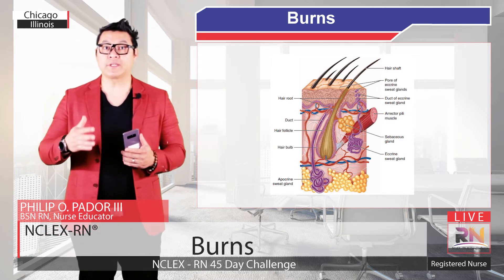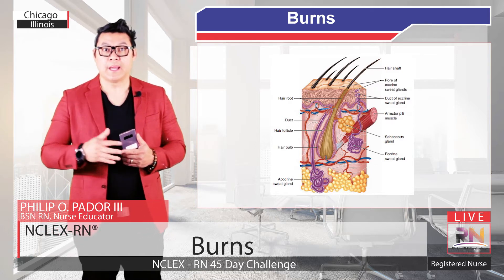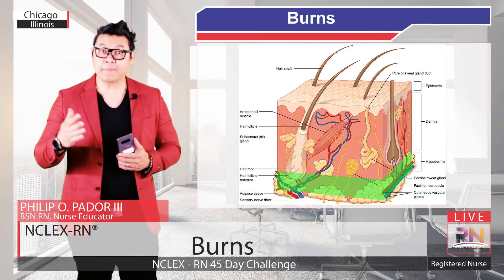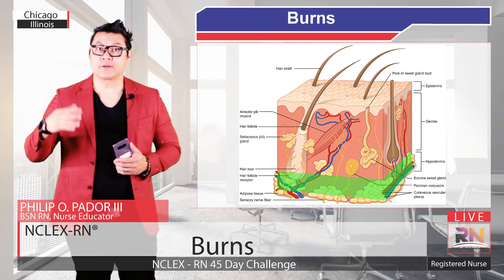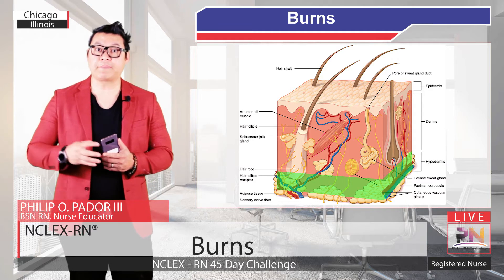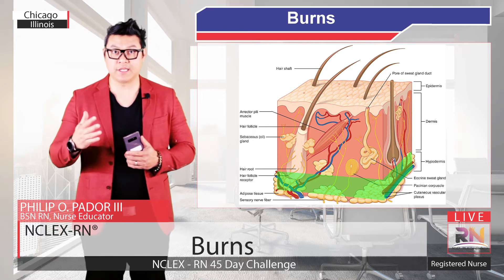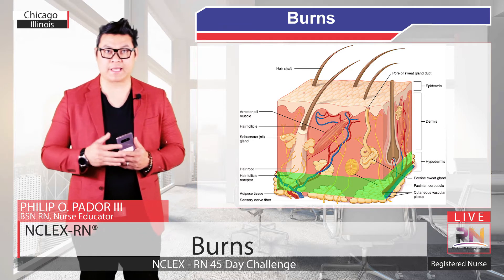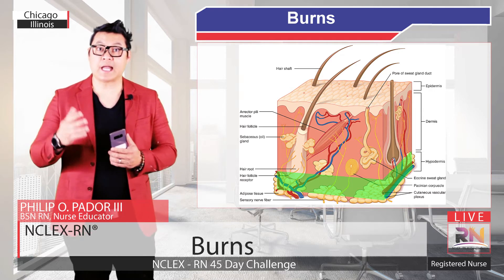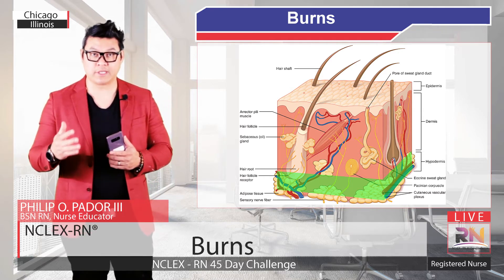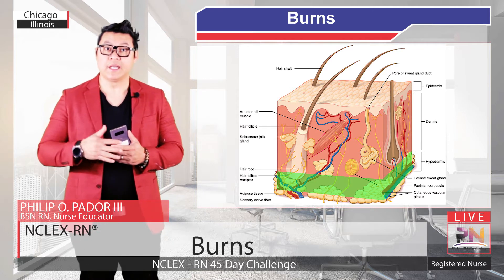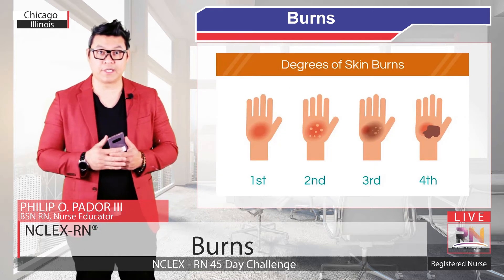Just below the reticular layer is the hypodermis. It's made up of fat and connective tissues that insulate and pad the deeper tissues and anchor the skin to the underlying muscles. When the skin is burned, it damages cells and the proteins within them, and the number of skin layers affected determines the burn degree.